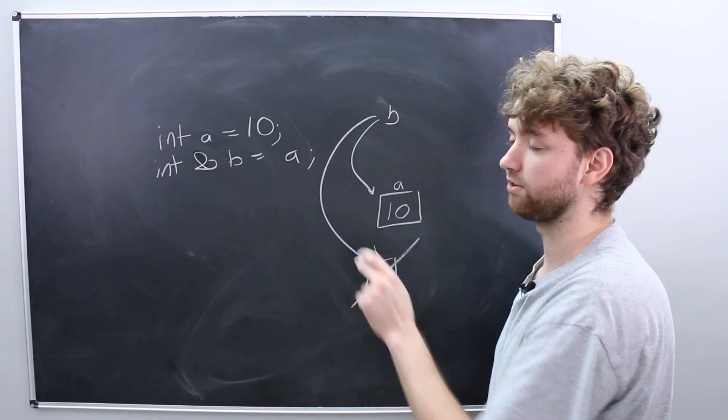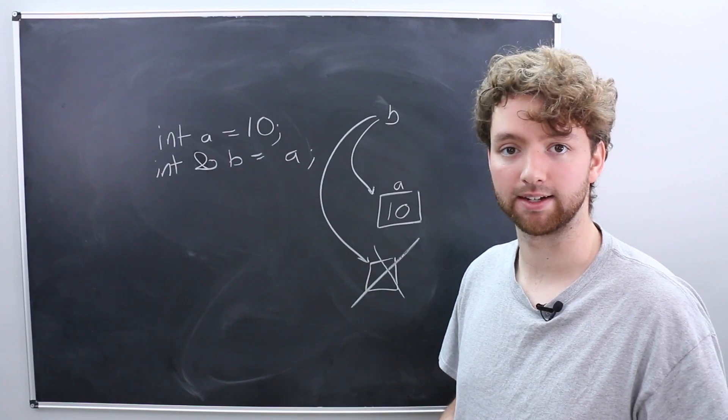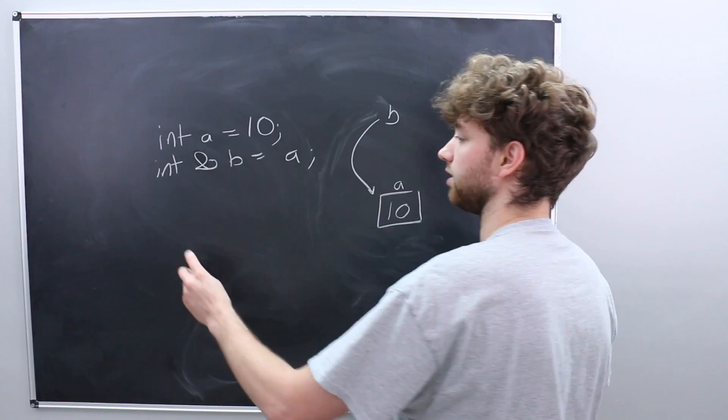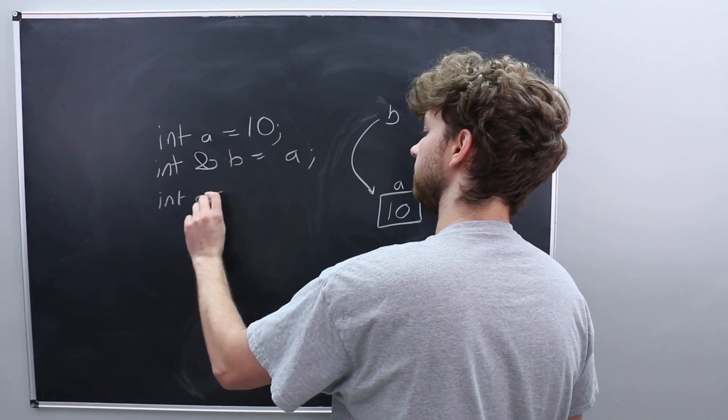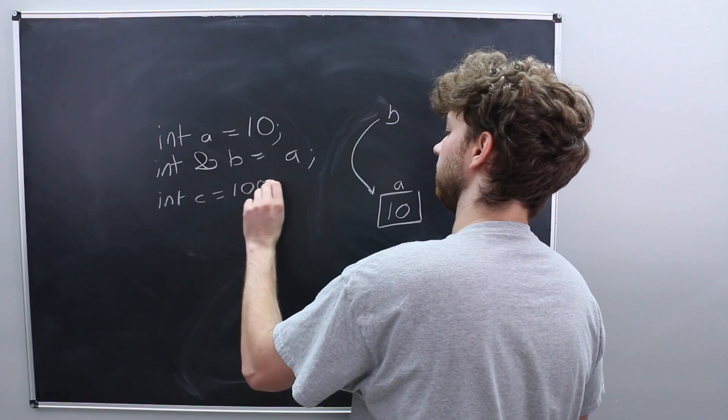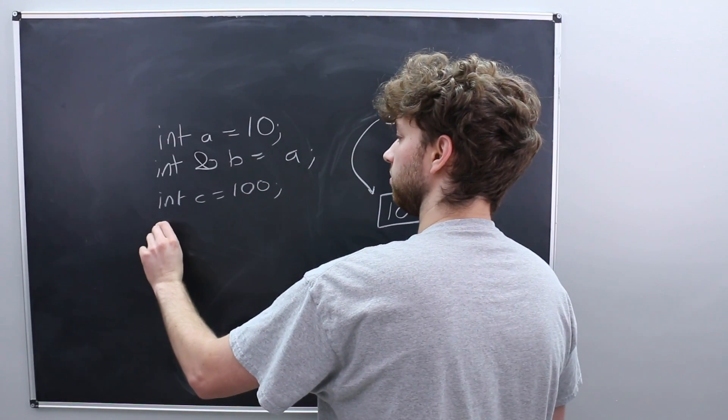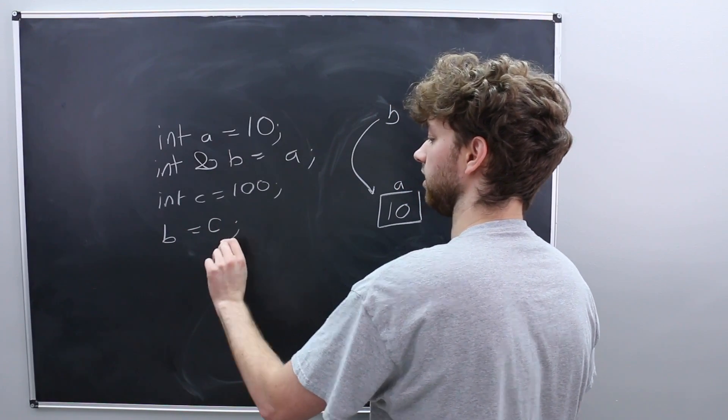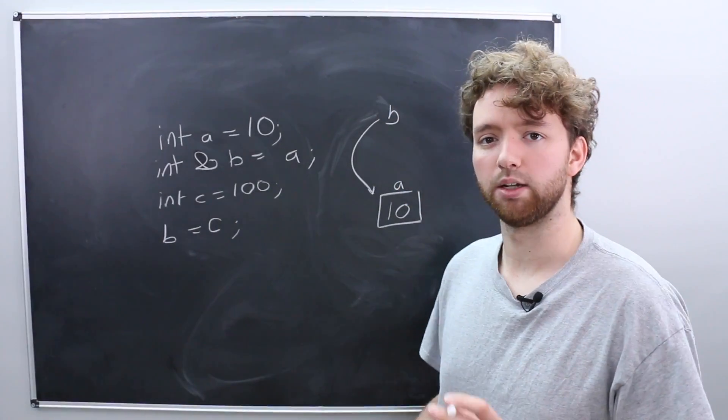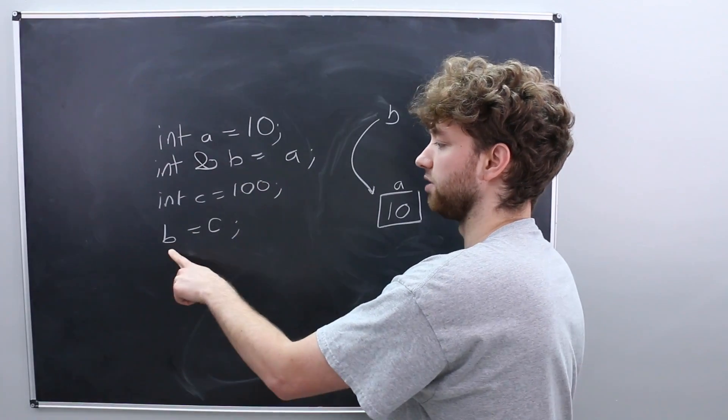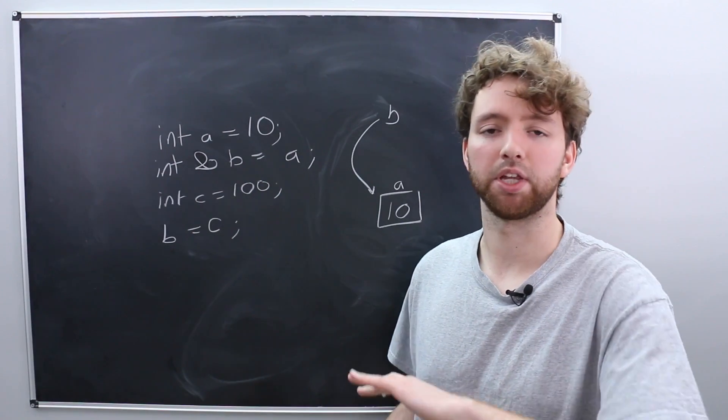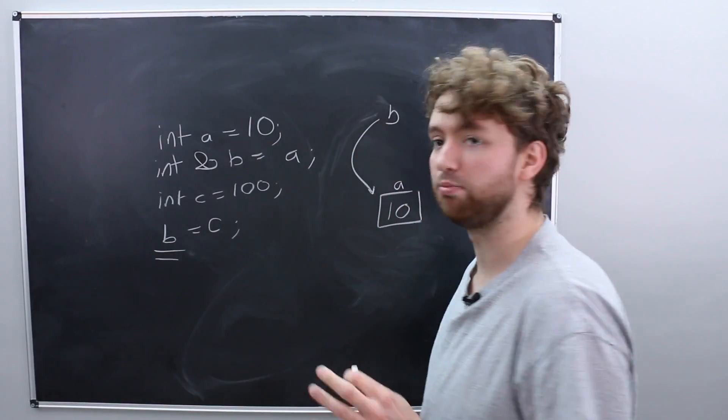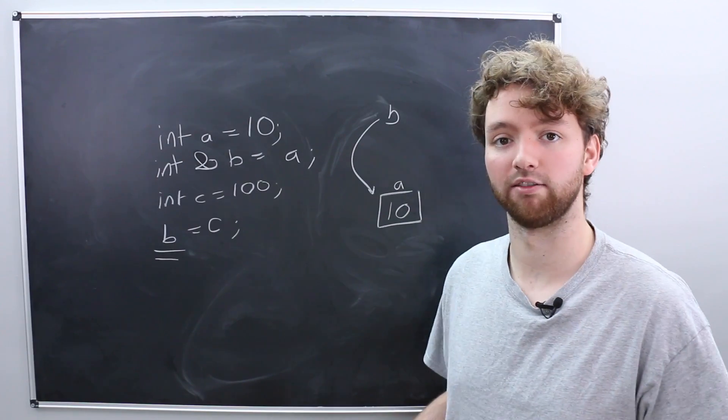So it's not possible to make this refer to somewhere else in memory. This can't be done. So the location we set to the reference is permanent. A point of confusion that might come up is what if you do reassign this reference. Let's say we have another variable so we'll say int c is assigned the value 100 and then we take b and assign it the value c.